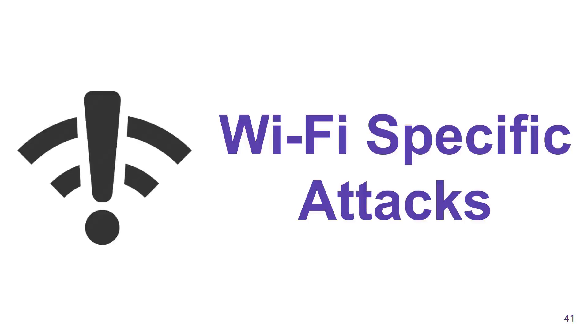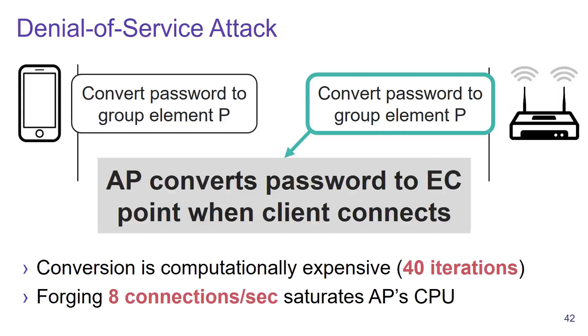We also discovered several Wi-Fi specific attacks. The first one is a simple denial of service attack. This is caused because every run of the hash-to-curve algorithm has to execute 40 iterations, and this is computationally quite expensive.